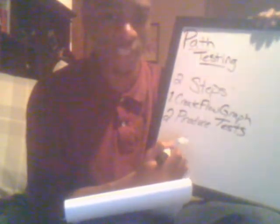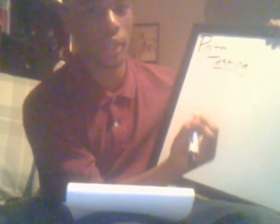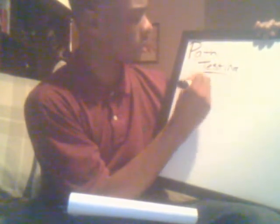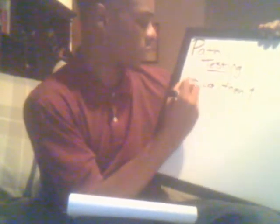I'm going to give a brief example on path testing — specifically the first step, which is creating a flow graph. Let's say we have an if statement. Writing it out in pseudocode: if a then one, and then we end our if.